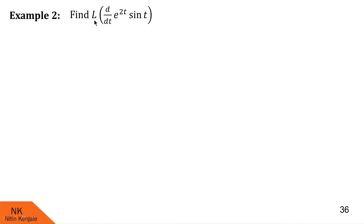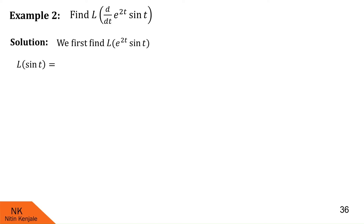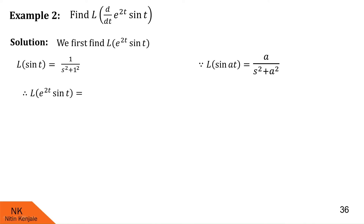Now let us proceed with example two: find the Laplace transform of the derivative of e^{2t} · sin t. First, we find the Laplace transform of e^{2t} · sin t. Recall that L{sin(at)} = a/(s² + a²); with a = 1, L{sin t} = 1/(s² + 1). Using the first shifting theorem, L{e^{at} · f(t)} = φ(s − a), we replace s by s − 2 to get L{e^{2t} · sin t} = 1/((s − 2)² + 1). We call this φ(s).